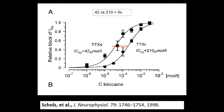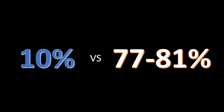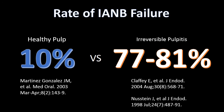So what is so problematic about having more sodium channel voltage 1.8? The problem is that TTXR sodium channels, such as sodium channel voltage 1.8, have very low affinity to sodium channel blockers such as lidocaine. This graph shows that it requires almost 5 times more concentration of lidocaine to block TTXR sodium channels compared to TTXS sodium channels. The inferior alveolar nerve block failure rate is 10% for healthy pulp versus about 80% for irreversible pulpitis — meaning it only works about 20% of the time for irreversible pulpitis.